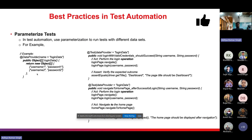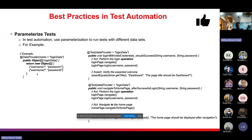Parameterizing tests: in test automation, use parameterization to run tests with different data sets. In the sample code, a `@DataProvider` named `loginData` is defined to supply different sets of username-password pairs for testing. The `loginWithValidCredential_shouldSucceed` method and `navigateToHomePage_afterSuccessfulLogin` method are parameterized, allowing them to be executed with different combinations of username and password. This parameterization enables testing multiple scenarios efficiently, enhancing test coverage and versatility, and ensures test scripts are reliable for each set of test data fed during execution.